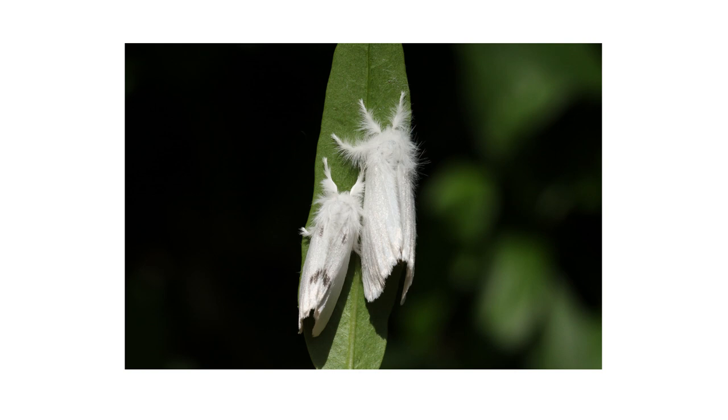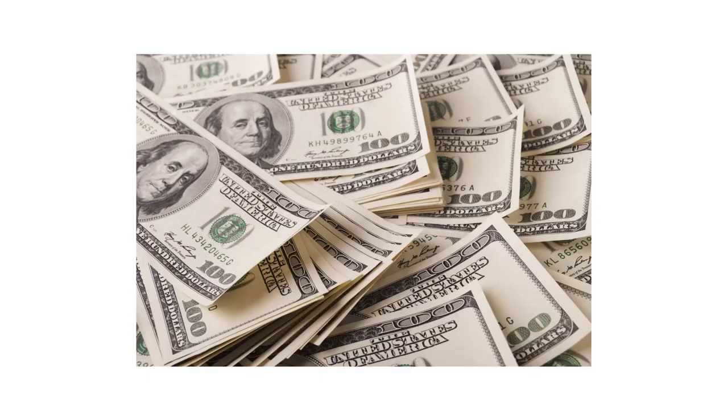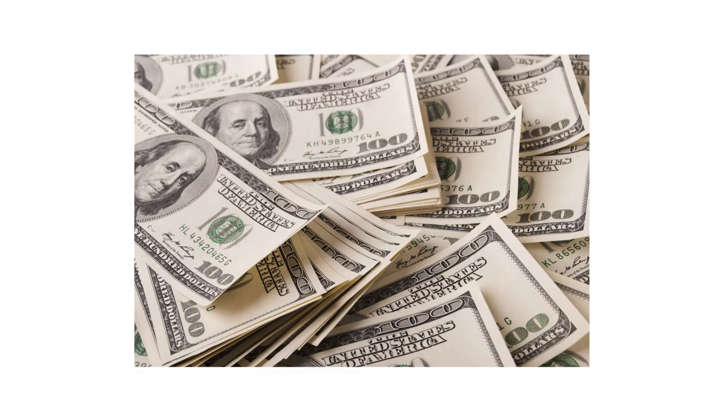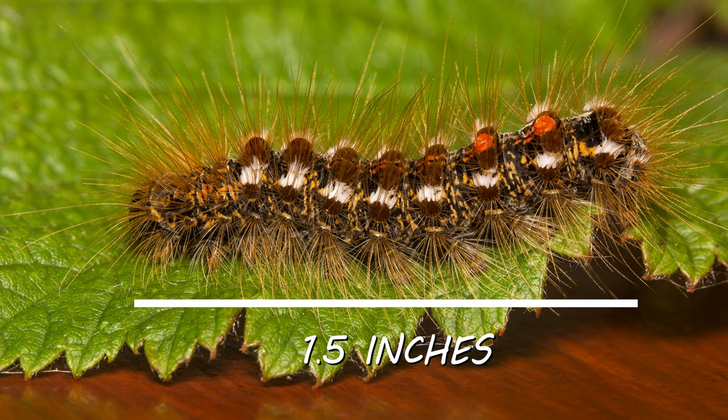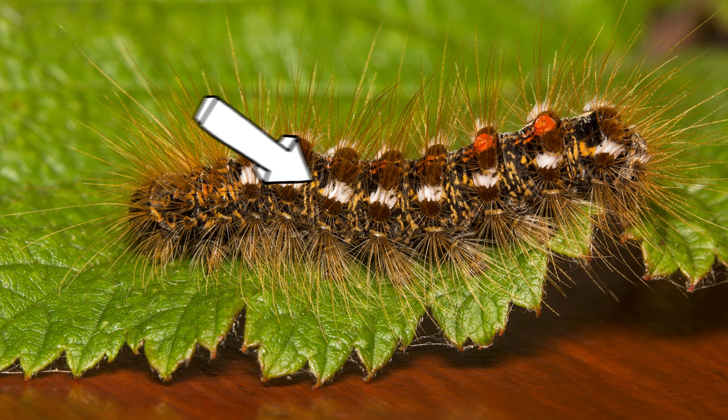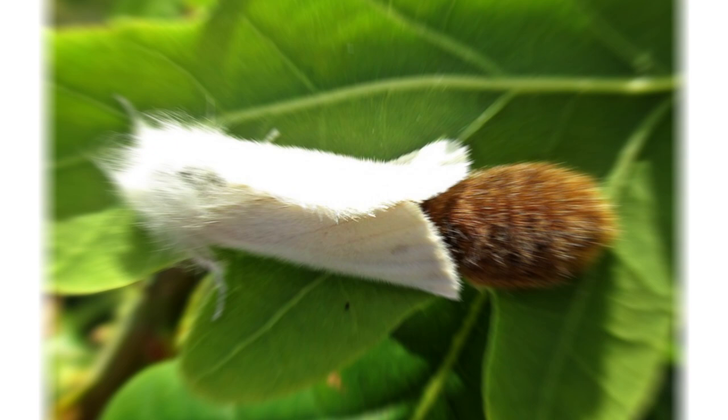The first thing you should do in any pest control plan is to identify what exactly you're dealing with. Careless identification can lead to wrong treatment methods, costing you time and money. Browntail moth caterpillars are small pests that grow up to 1.5 inches in length. They have hairy, dark brown bodies with a dashed white stripe on both sides and two orange or red spots